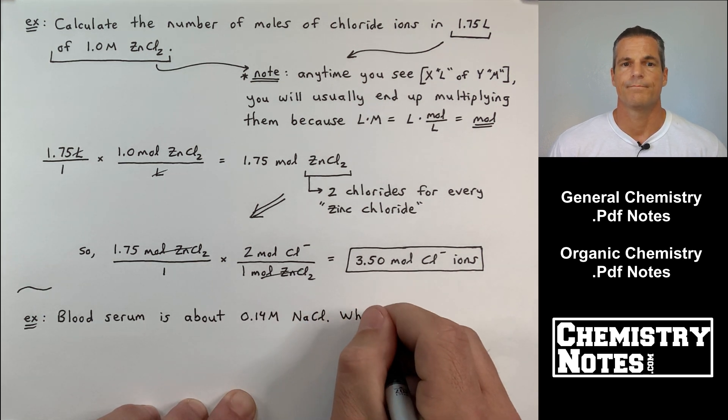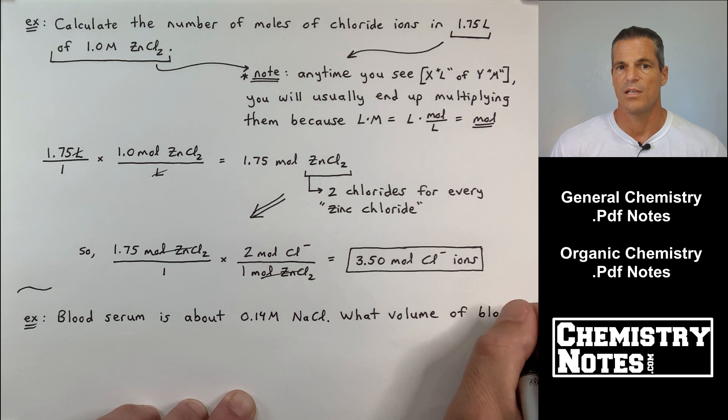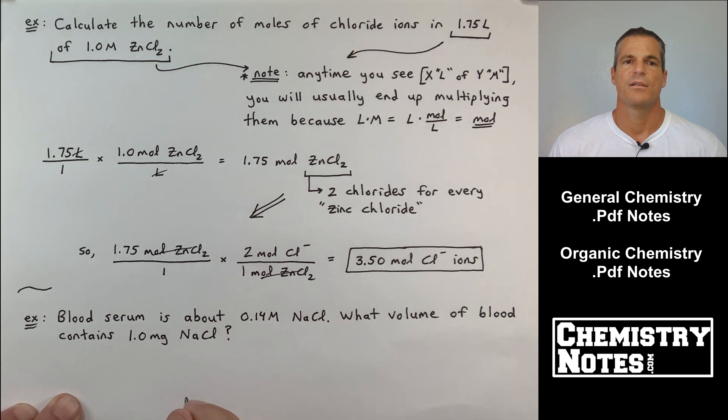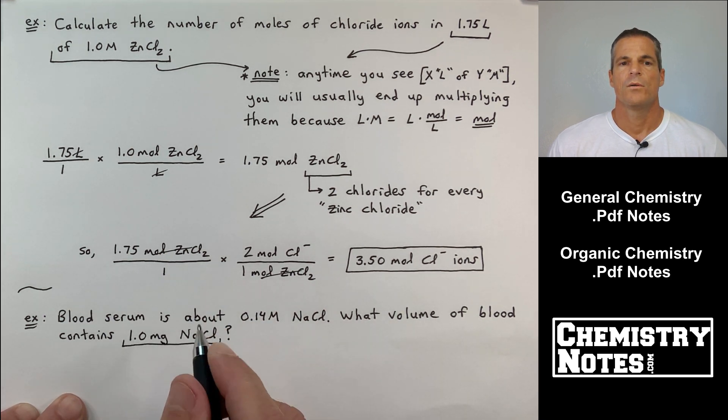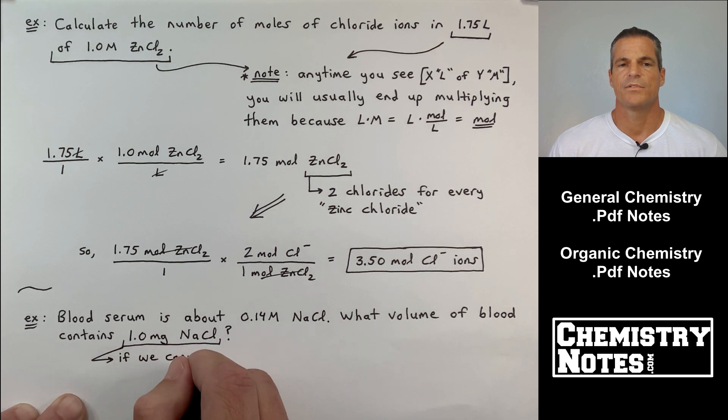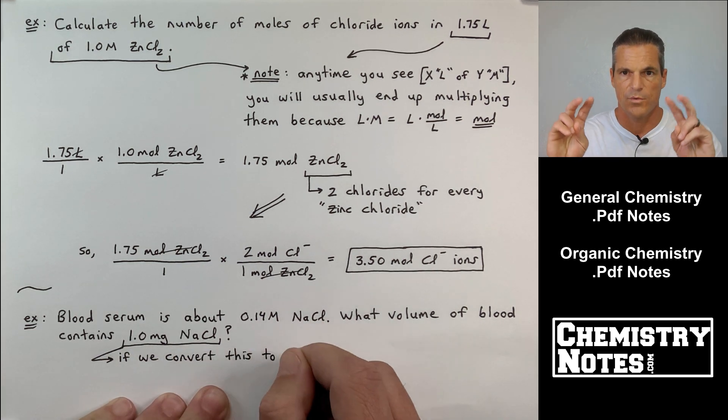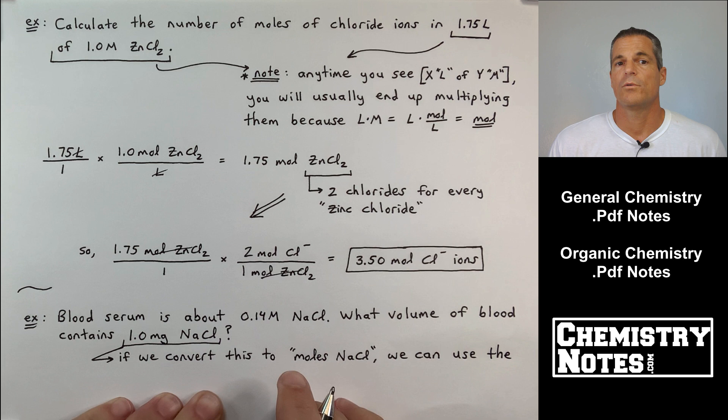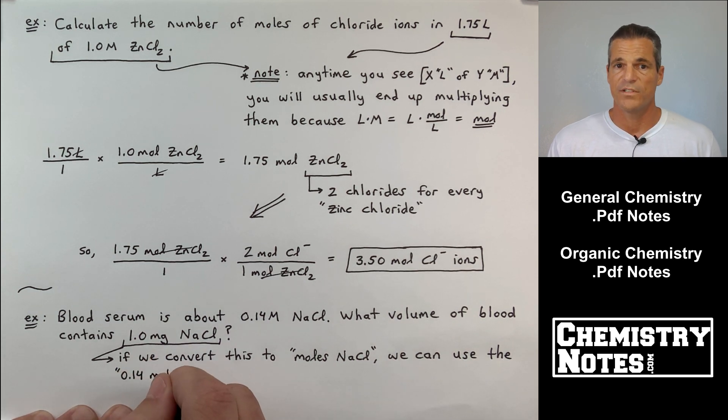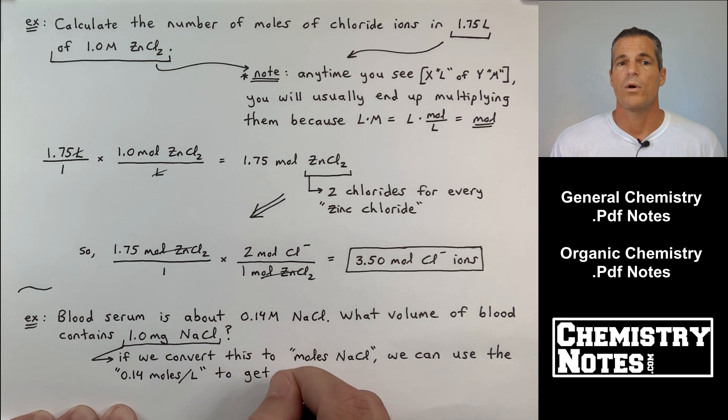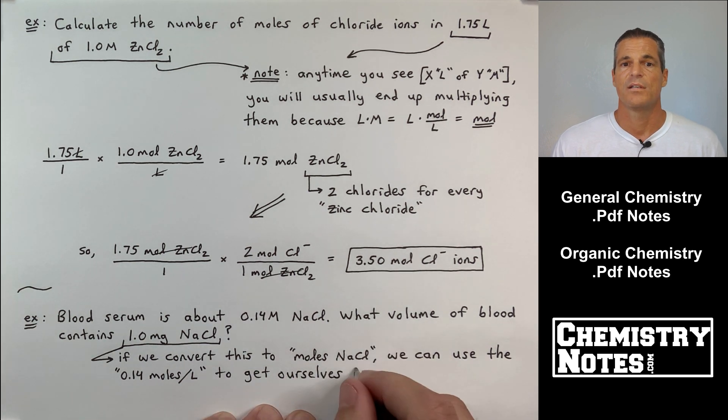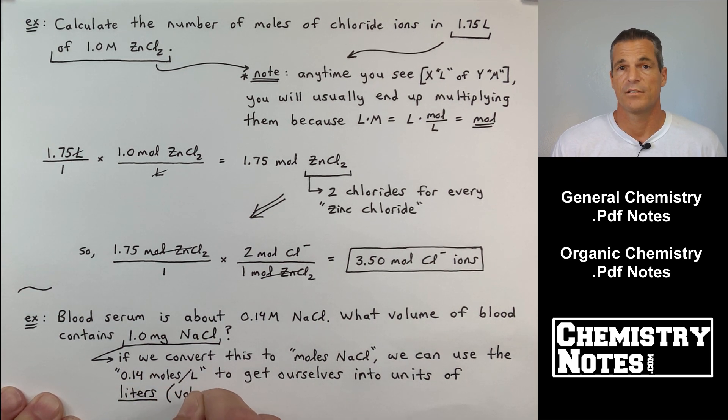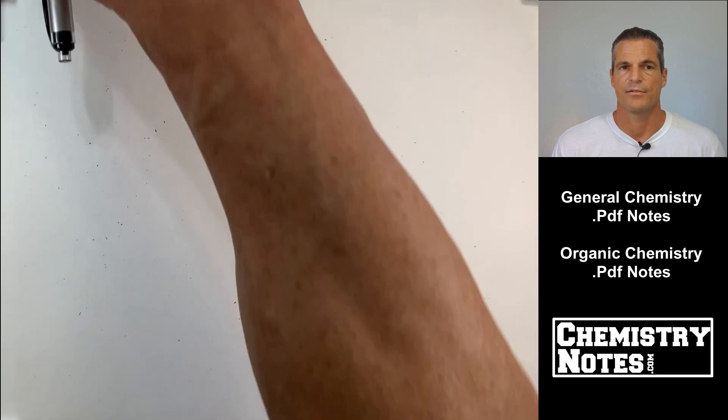All right, next example. Blood serum is about 0.14 molar NaCl. What volume of blood contains 1.0 milligrams of NaCl? Well, we've got two things in this problem. So it's not just as easy as quote, start with what you're given and put it over 1. You have to actually figure out what they're asking you here. So regarding the 1.0 milligrams of NaCl, if we convert this to moles of NaCl, we can use the 0.14 moles per liter to get ourselves right into units of liters. And liters is a volume. So that's our plan of attack here.